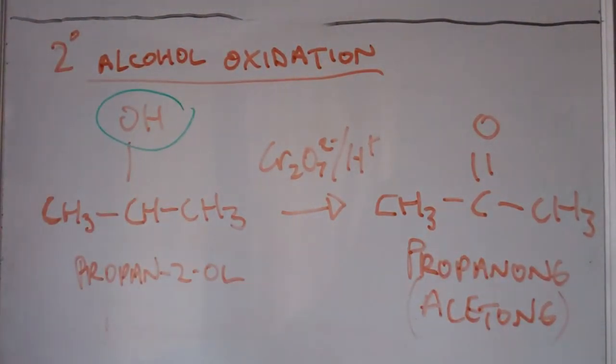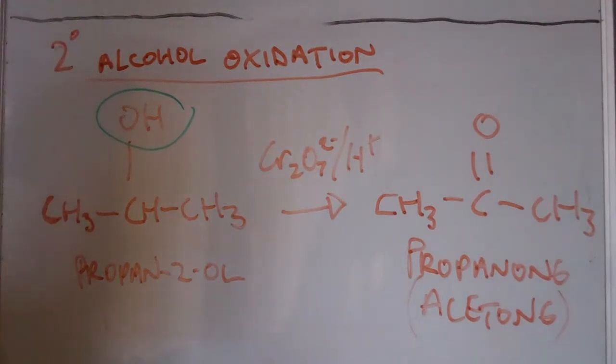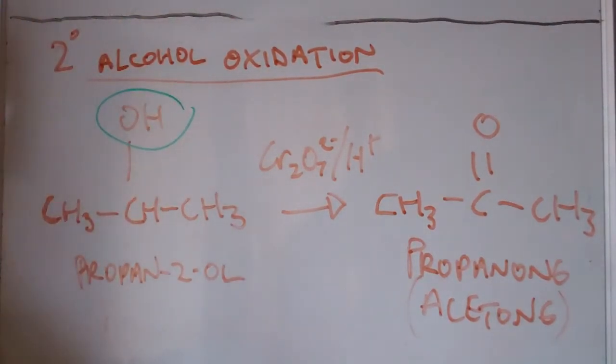Primary alcohols are oxidized in the presence of acidified dichromate to the aldehyde and then to the respective carboxylic acid. Secondary alcohols are oxidized in the presence of acidified dichromate to the ketone. As a general rule, tertiary alcohols are not oxidized by acidified dichromate solution.